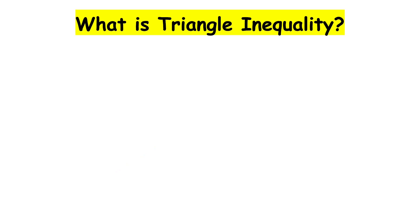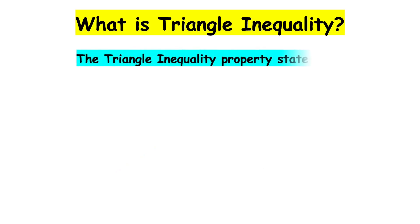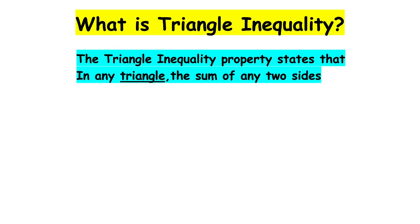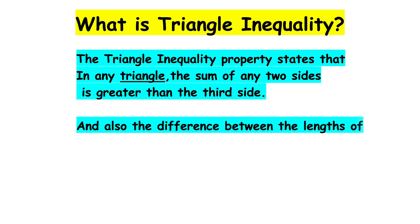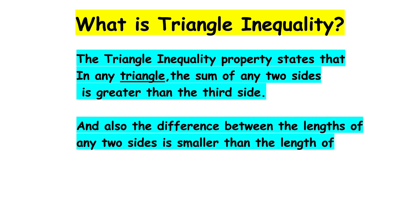The triangle inequality property states that in a triangle, the sum of any two sides is greater than the third side. Also, the difference between the lengths of any two sides is smaller than the third side.